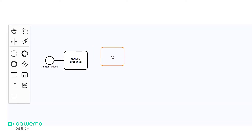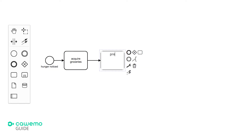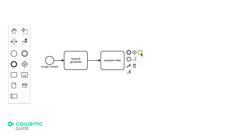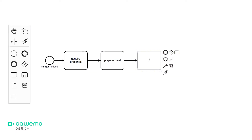Our process will now only proceed after we've acquired some groceries. Once we've acquired the groceries, we can add another task to actually prepare a meal. Finally, we want to eat the delicious meal we prepared. So create another task and name it Done.